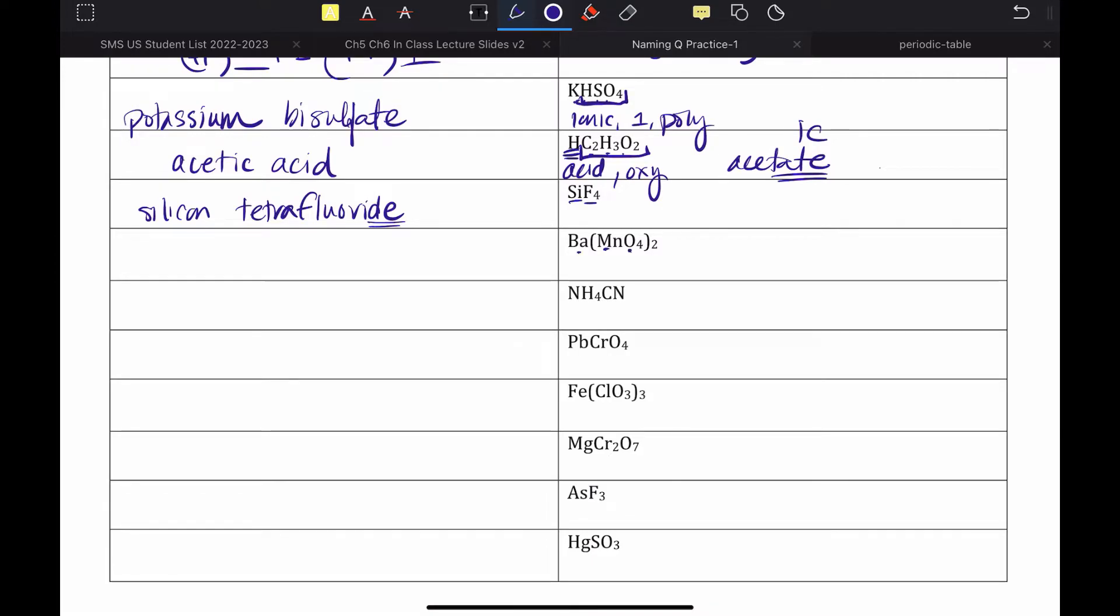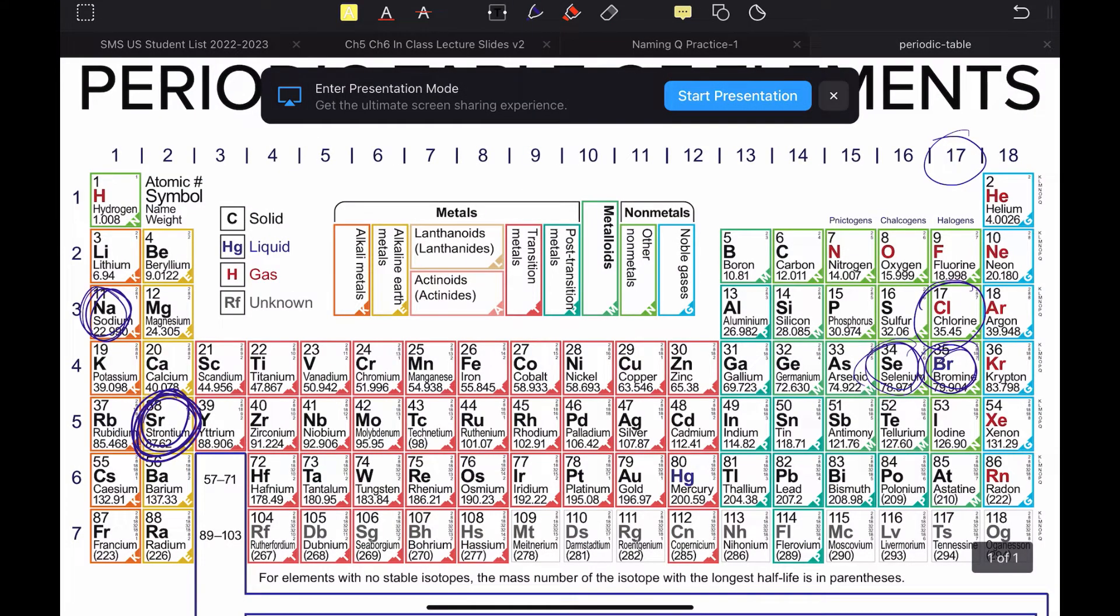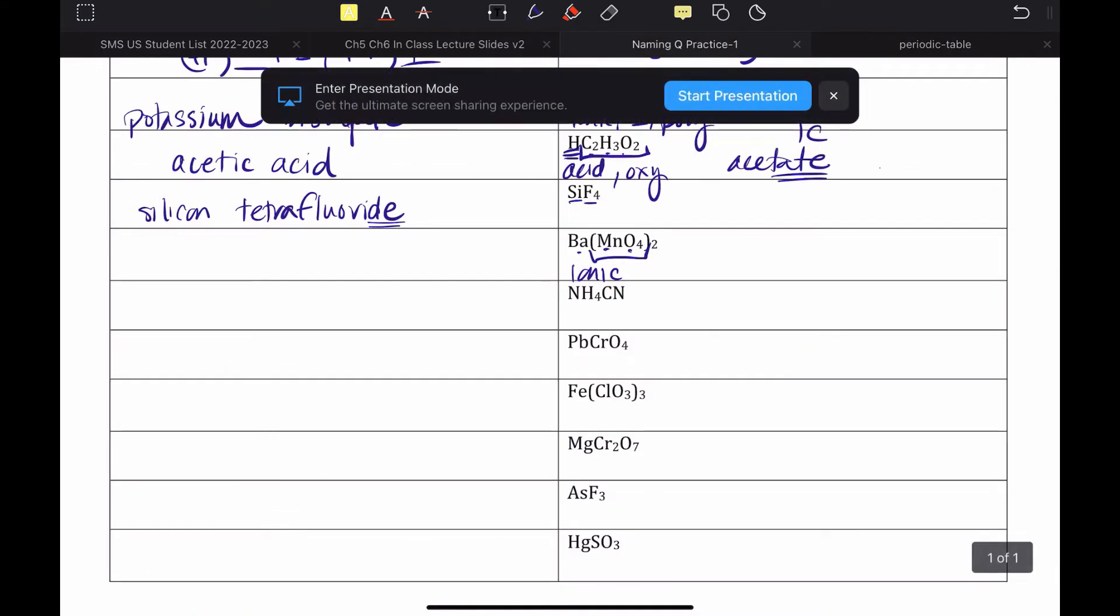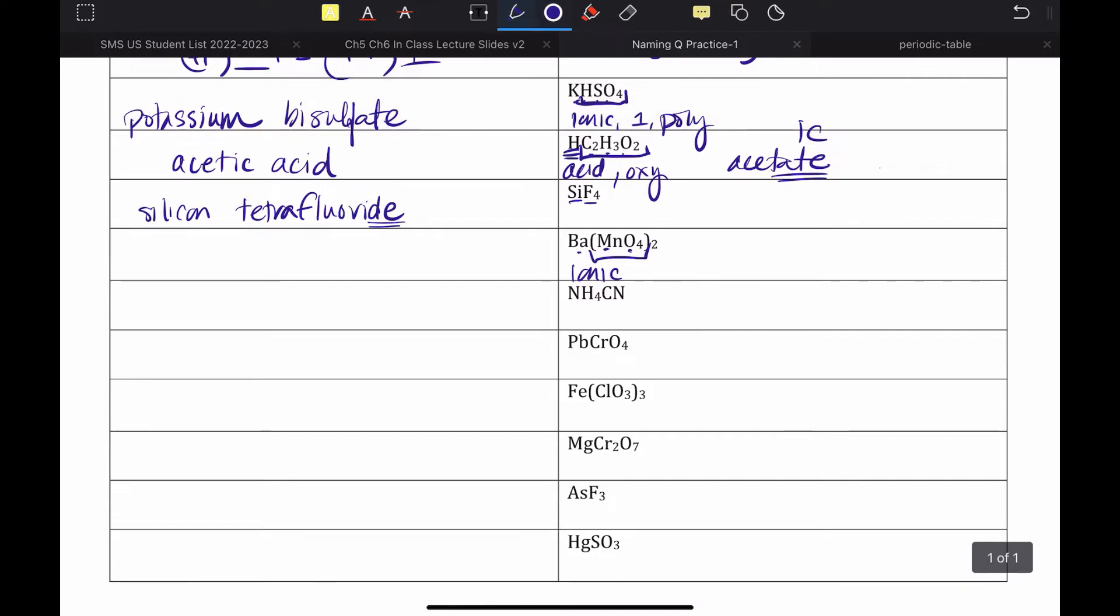Next one. I see, I've got three elements. This must be a polyatomic ion, so it's ionic. I need to go find barium. Barium is in group two, which means that this is a type one. And contains a polyatomic ion. So, I'm just going to barium. That's the name of my metal. And full name of my polyatomic ion, which is permanganate. Barium permanganate.